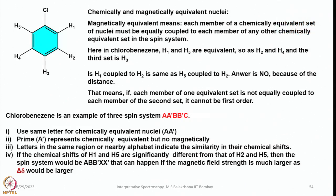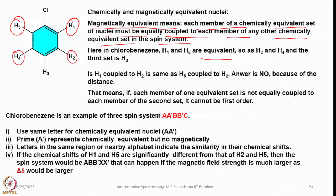Now we can have a better understanding of chemical and magnetic equivalence. Magnetically equivalent means each member of a chemically equivalent set of nuclei must be equally coupled to each member of any other chemically equivalent set in the spin system. In chlorobenzene, H1 and H5 are equivalent, as are H2 and H4, with H3 as the third set. But is H1 coupled to H2 the same as H5 coupled to H2? The answer is no, because of the distance. So if each member of one equivalent set is not equally coupled to each member of the second set, it cannot be first order.